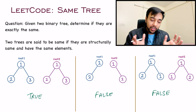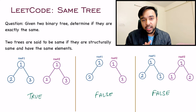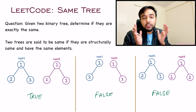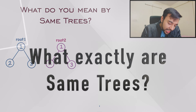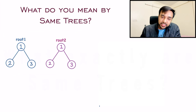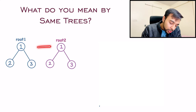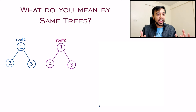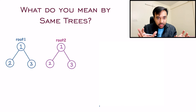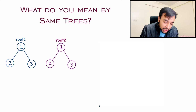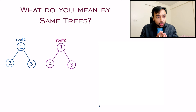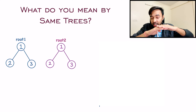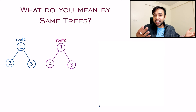So now, if you feel that you have understood the problem statement, feel free to try it out on your own. Otherwise, let us dive into the solution and try to understand what exactly it means when you say a same tree. You might think that if you traverse a tree in one way and get an output, and traverse the other tree in the same way and get the same output — for example, a level order traversal of the first tree gives one, two, and three, and the second tree also gives one, two, and three — then these two trees must be same and you can return true.